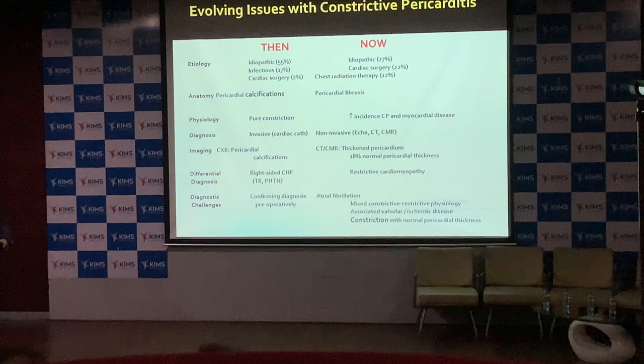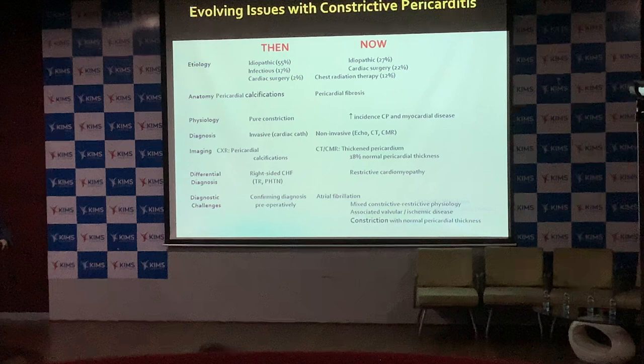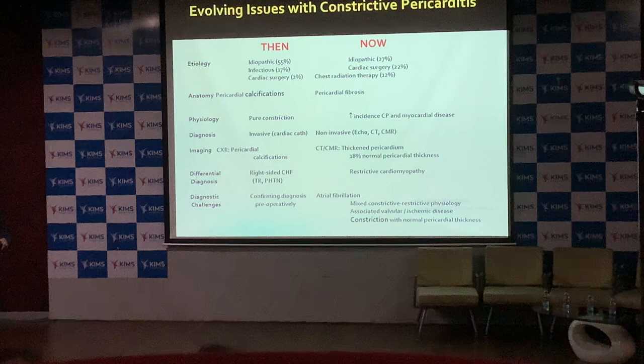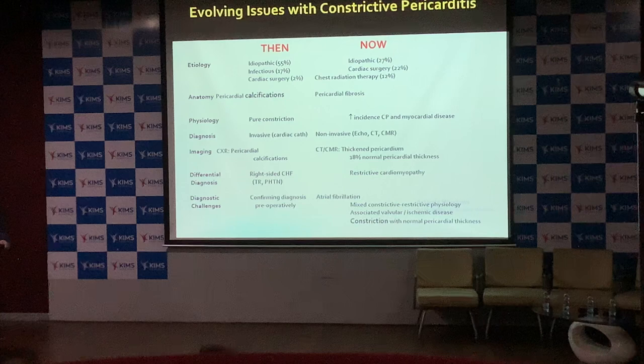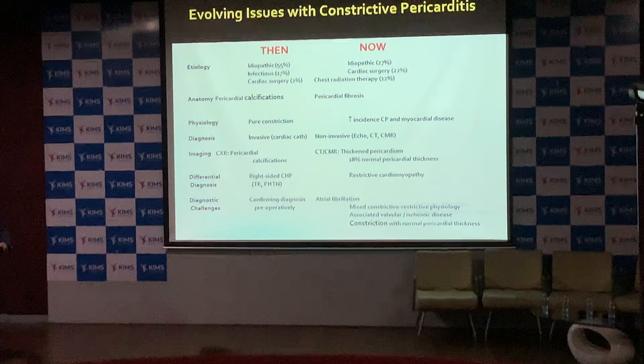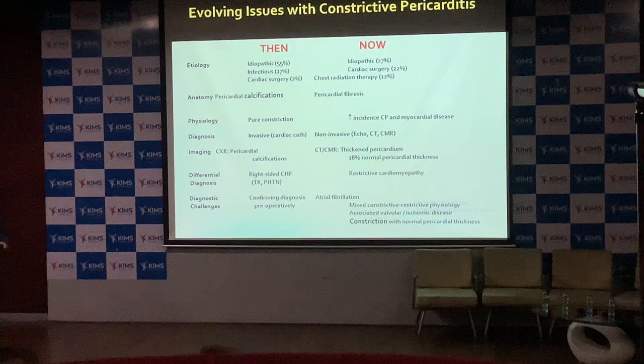The differential diagnosis includes right-sided congestive heart failure due to any cause — severe tricuspid regurgitation, right atrial myxoma, restrictive cardiomyopathy, particularly right-dominant restrictive cardiomyopathy, or right ventricular endomyocardial fibrosis. Before modern technologies, making this distinction was tough.